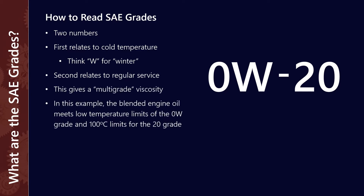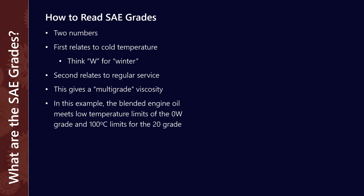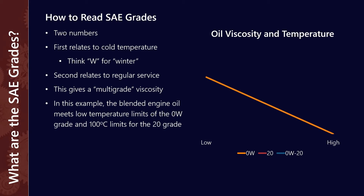In this example we have a blended oil that meets the low temperature limits of the 0W grade and the 100-degree limits for a 20 grade. What this means in practice is that on a graph of oil viscosity versus temperature, viscosity decreases with temperature. The 0W grade would look something like this, the 20 grade is a bit thicker over the temperature range, and 0W-20 skips between the two — acting like a 0W at low temperatures and like a 20 at high temperatures. We achieve this through the use of viscosity modifiers, which are a class of additives I'll explore in more detail in another video.